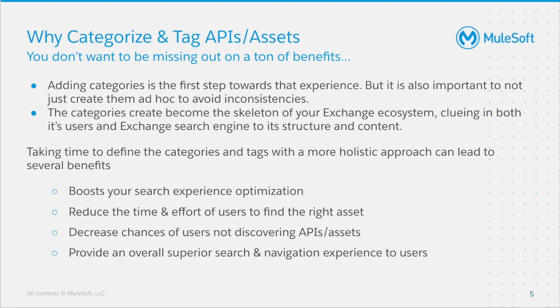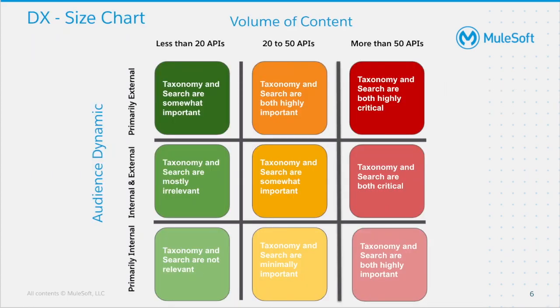Taking time to define the categories with a more holistic approach can lead to several benefits, which include: it boosts your search experience optimization, reduces the time and effort of users to find the right assets, decreases chances of users not discovering APIs and assets, and provides an overall superior search and navigation experience to users. As the number of APIs grow, taxonomy and search become very critical for internal and external API audiences. The bigger the number of APIs, the more important taxonomy becomes.